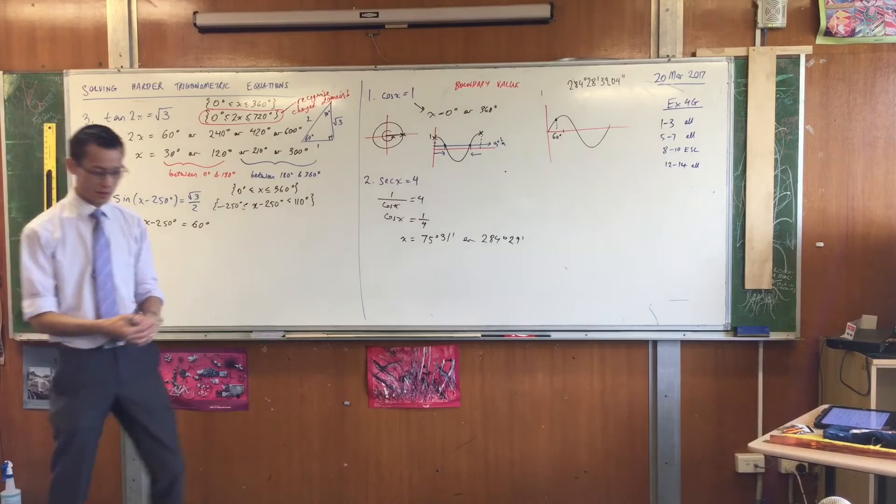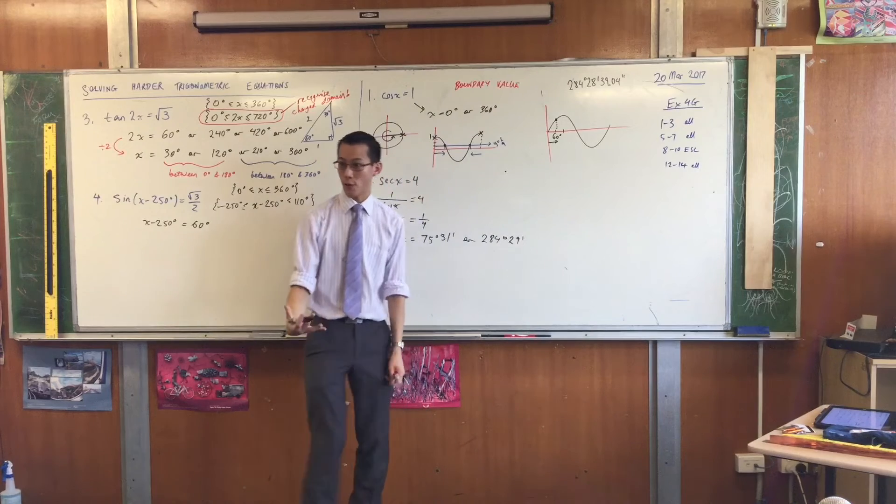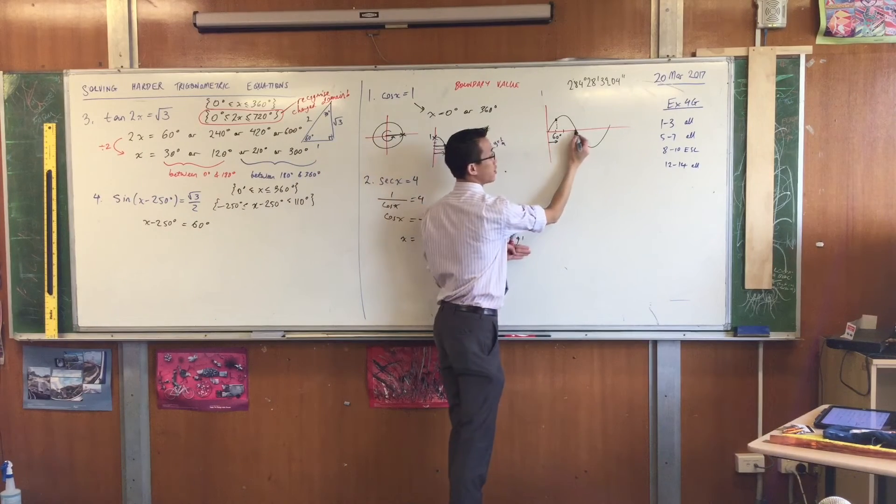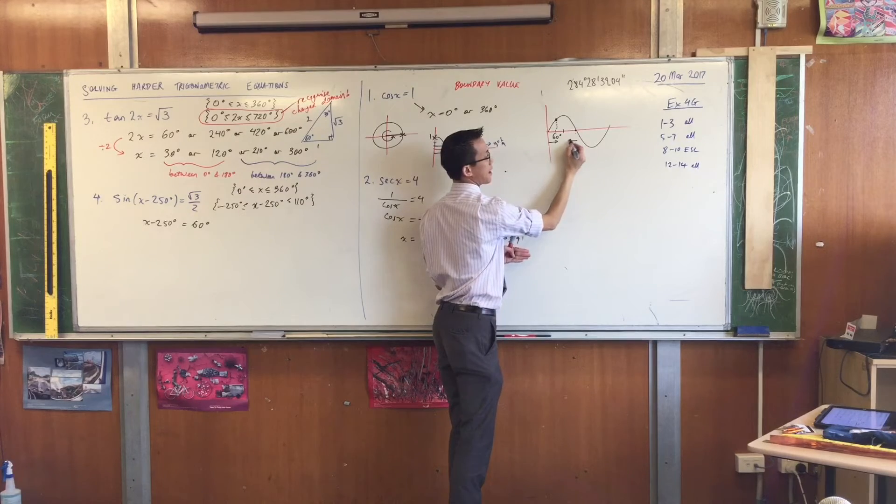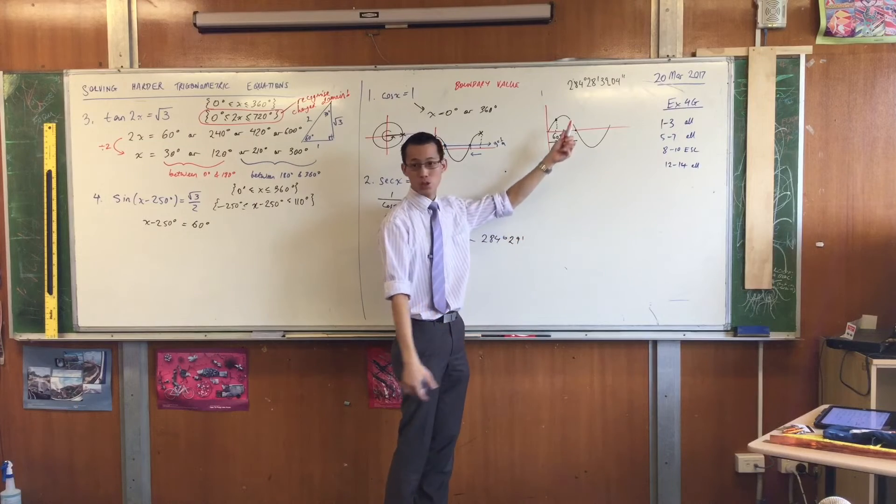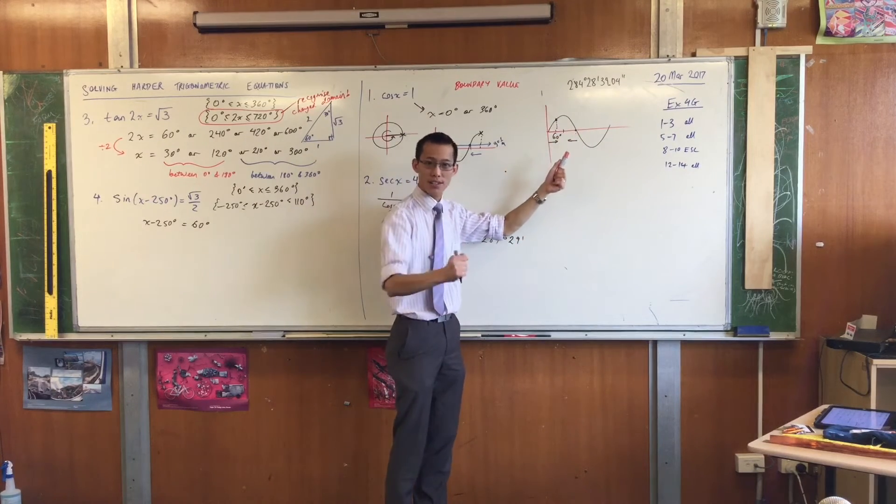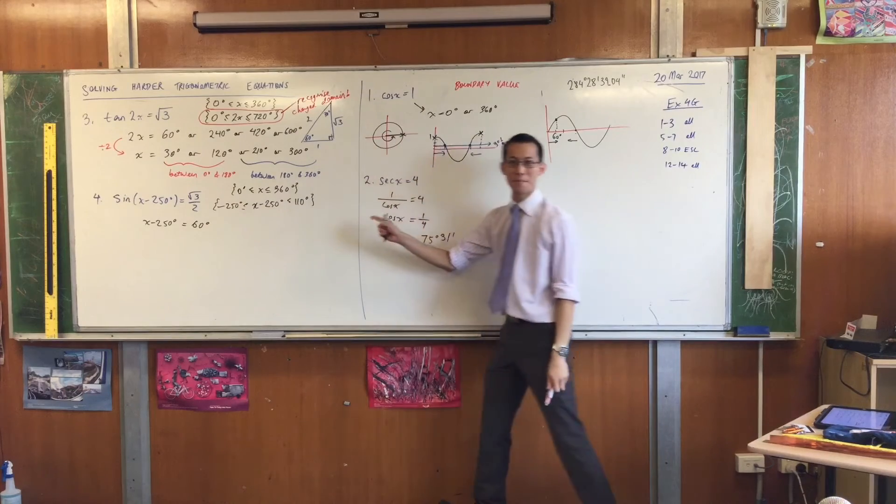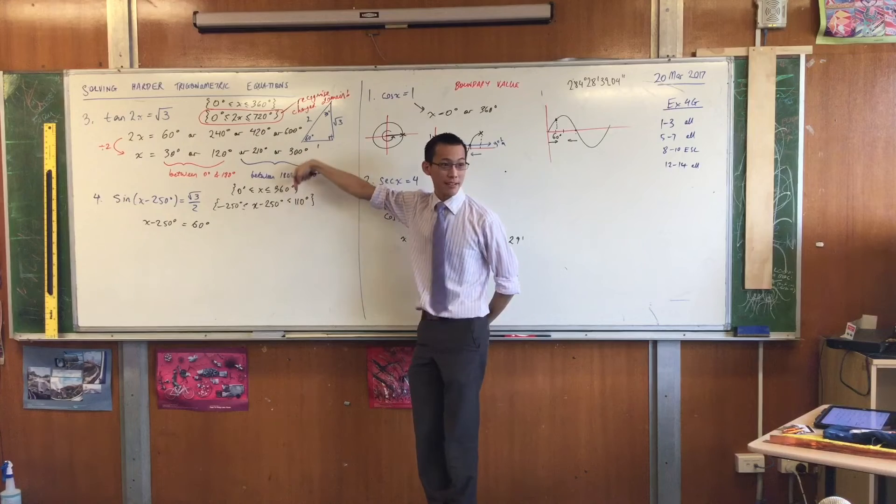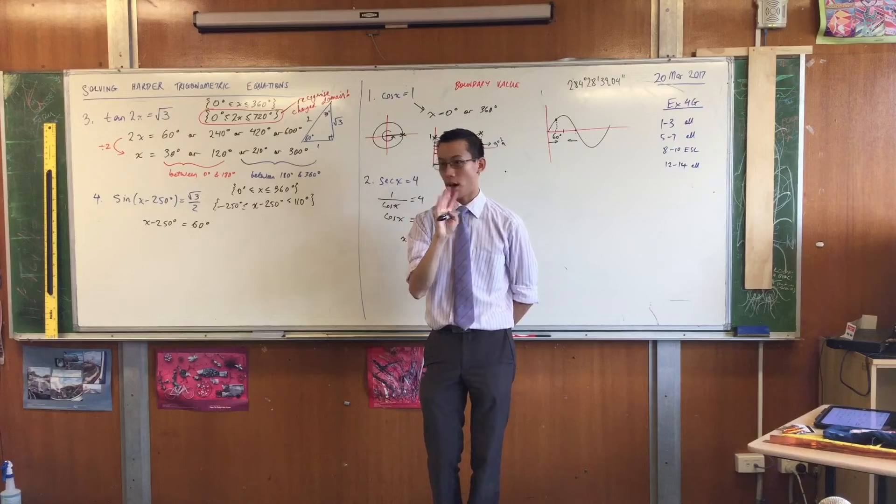Look at the symmetry of the graph. If you went forward from 0, 60 degrees, to get the first solution. Look at the symmetry of that first bit there. That bit there. So you've got to get the other solution by going backwards 60 from 180. Right? So your next solution would be 120 degrees. That's normally what you would say. Right? But I'm not going to say it this time. Can someone tell me why? 120 degrees is outside this domain. Right? So it's not going to be a solution for this. So I'm not going to write 120.